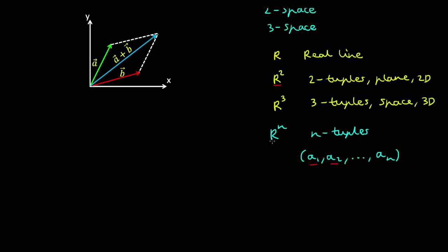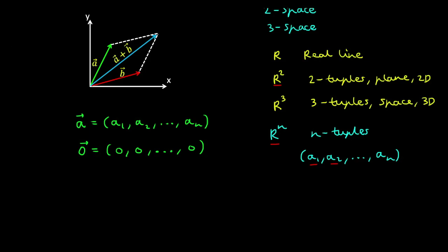The operations of vectors in Rⁿ extend the vector operations in 2-space and 3-space. If we denote vector a as having components a₁ to aₙ, then in n-space the zero vector has the same number of components but all zeros. Similar to 2-space and 3-space, two vectors a and b are equivalent if and only if their components are all equal — a₁ equals b₁, a₂ equals b₂, continuing up to n components.